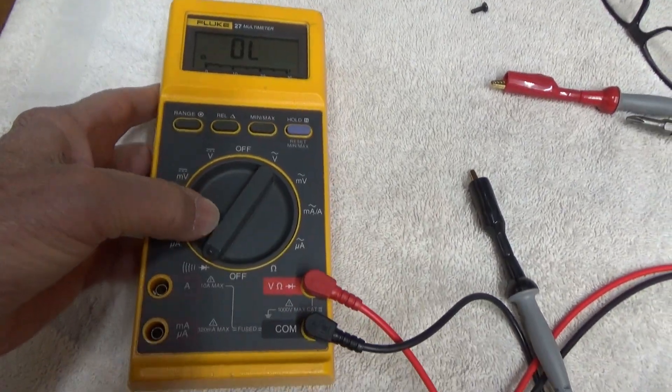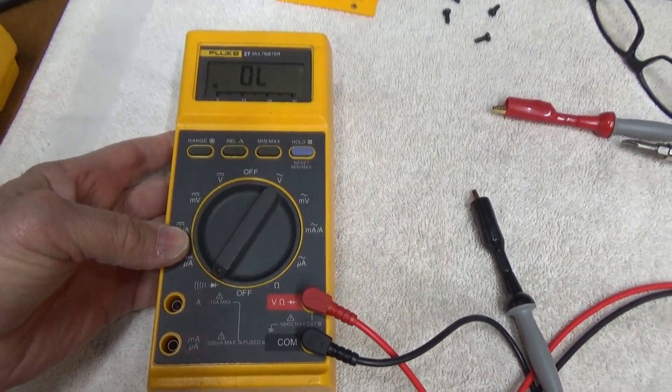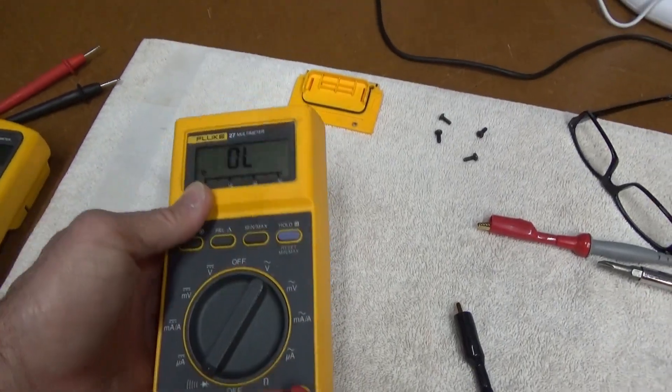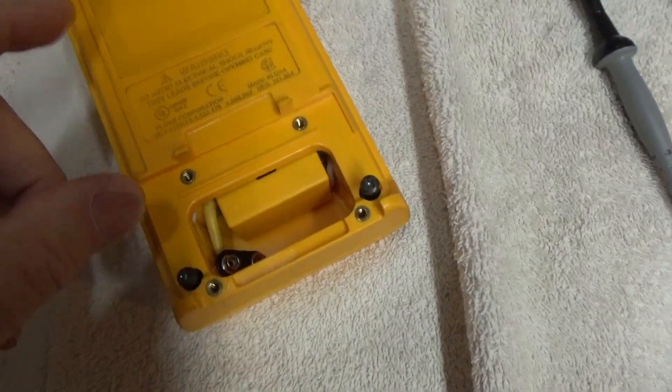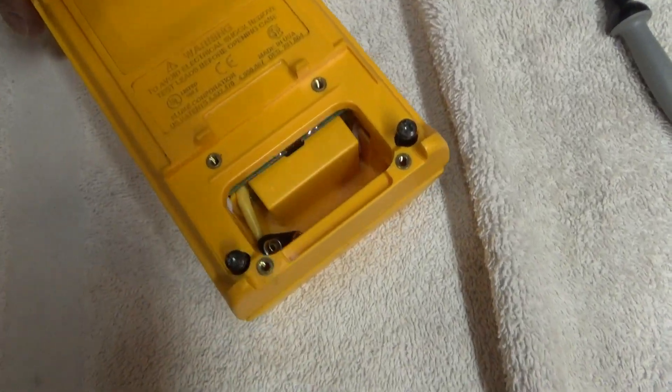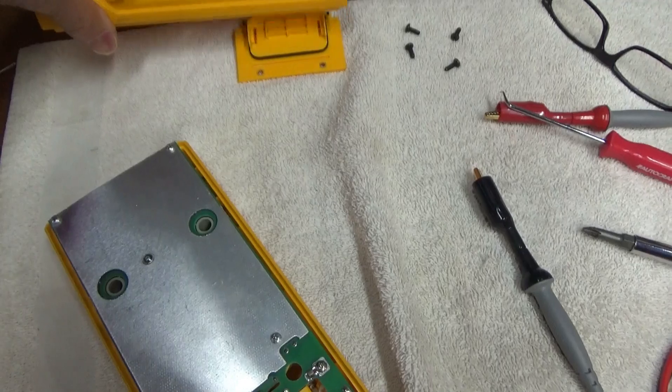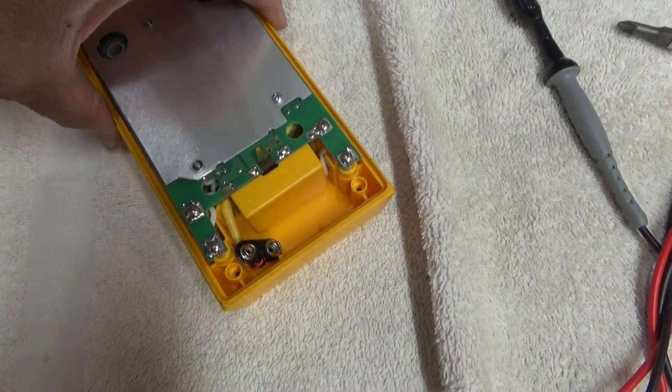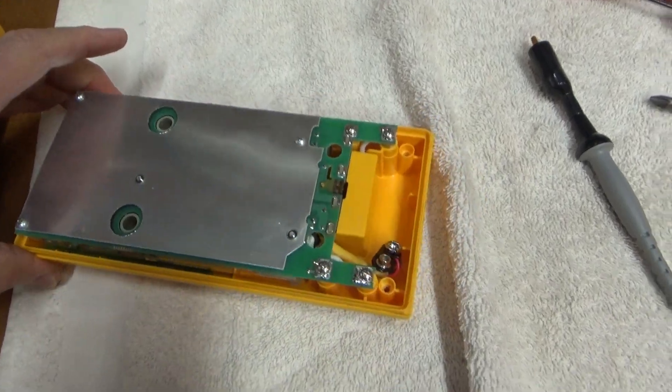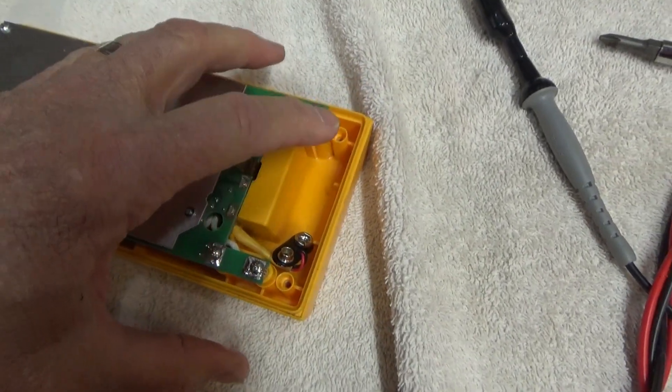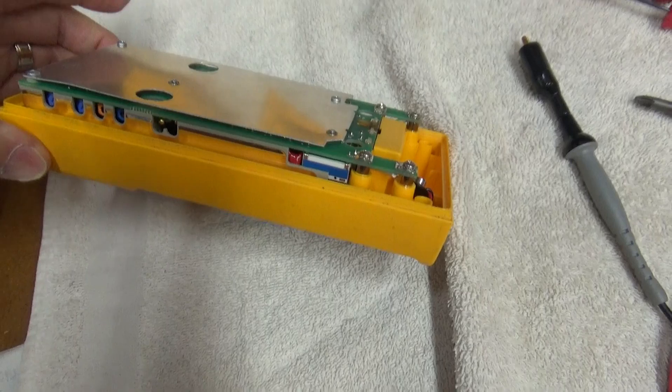All right, removed the battery and pulled out the four screws that hold the back on. Can't see anything yet. Let's go ahead and pull these screws off and pull the unit out of there.